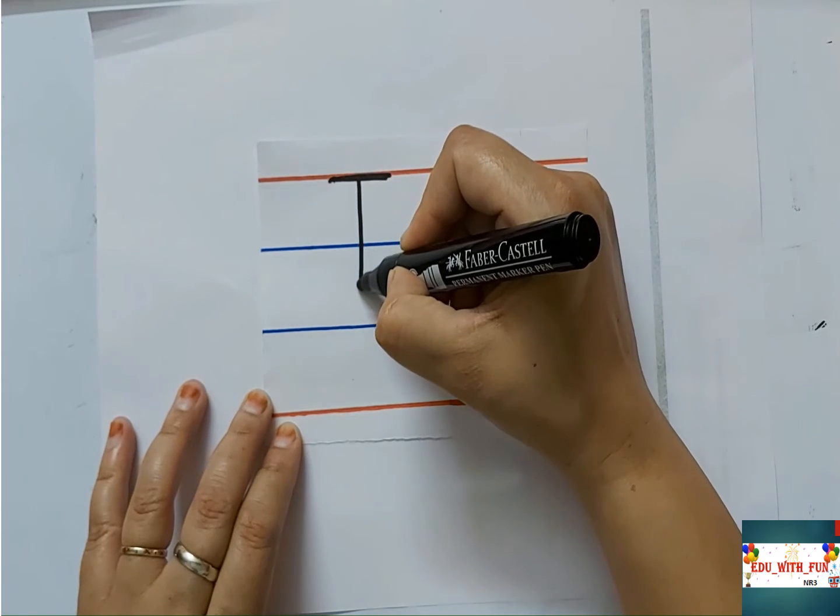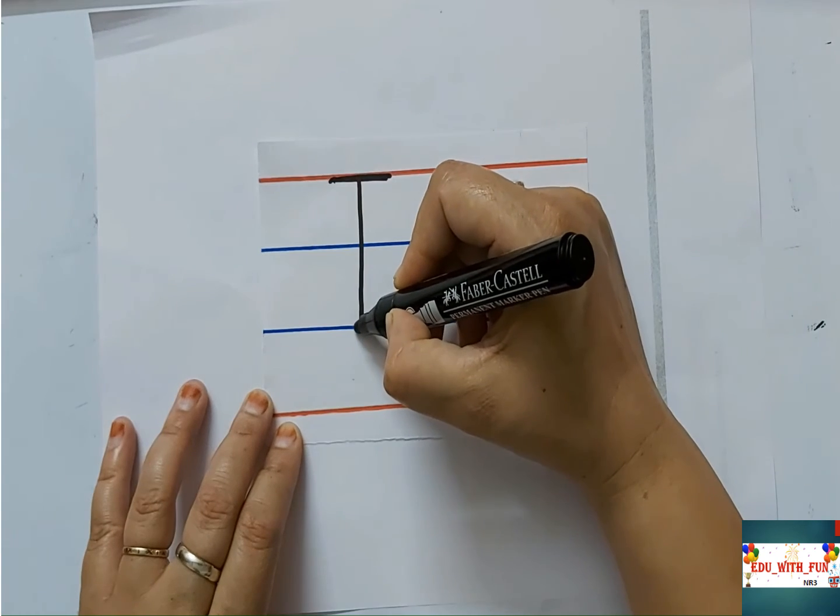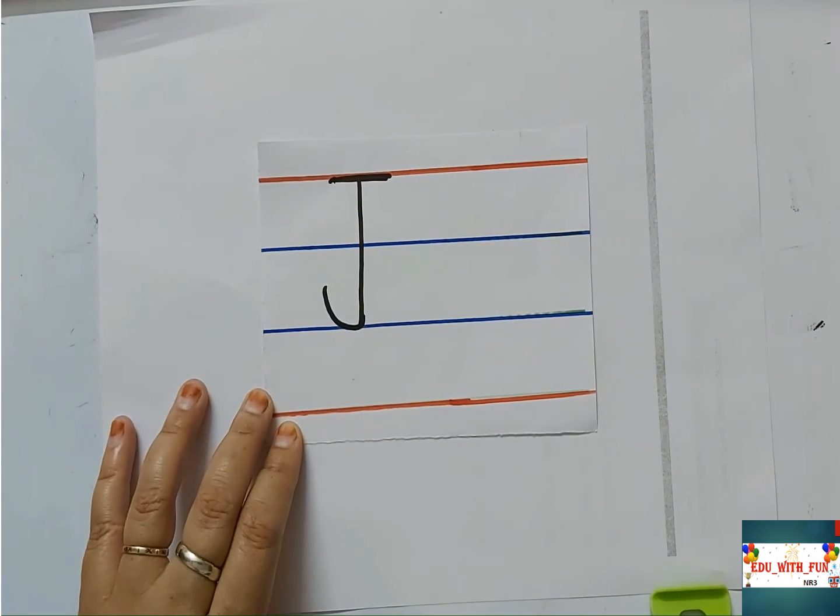Can you see here? Yes. Now while coming towards the third blue line you have to make a curve. Yes, like this. Very good. This is capital letter J.